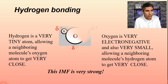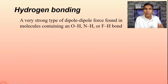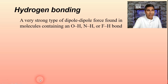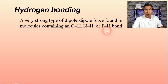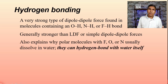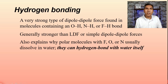Hydrogen bonding can be defined as a very strong type of dipole-dipole force found in molecules that contain an O-H bond, an N-H bond, or an F-H bond. The most common are O-H and N-H; F-H is less common but also counts. If you see any one of those three bonds in a molecule, it exhibits hydrogen bonding. Hydrogen bonds are generally stronger than London dispersion forces or plain dipole-dipole forces. This also helps explain why polar molecules containing F, O, or N are likely to dissolve in water — they can hydrogen bond with water itself.